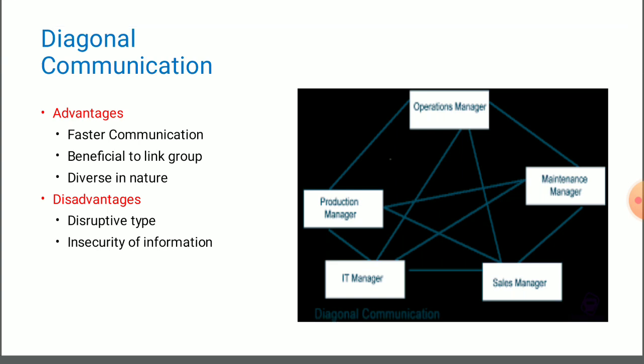This kind of communication is called cross-functional communication. In diagonal communication, there are no restrictions to talk. Any employee can talk with anyone else. For example, a worker wants to talk with the manager — there is no need to go through the supervisor first. There are no restrictions, no guidelines to be followed. They can talk with each other anytime, anywhere. This is called diagonal communication.